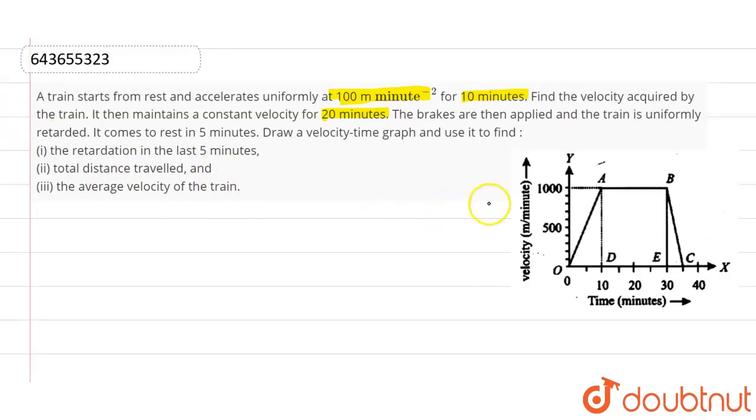So now we have the graph here. The vertical line represents velocity, horizontal line represents time. And as written in the question, for 10 minutes first of all, the train accelerates uniformly at 100 m per minute squared.